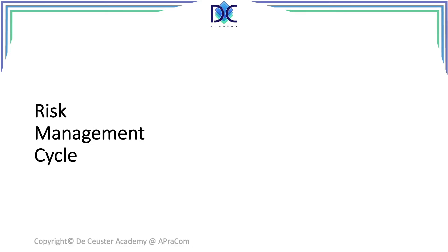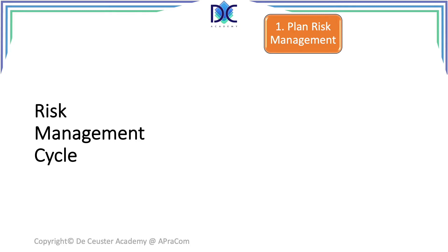The risk management process describes the different process steps that will be completed related to risk. The first step is plan risk management. In this step all the basic definitions, guidelines, techniques, tools and principles are described. These can be defined in general as part of the project management methodology of the company, but they also will have to be adjusted to the specific needs of the actual project. Risk planning includes amongst others: calculation methods, the probability and impact matrix, risk impact levels, frequency of meetings, reviews and reports.